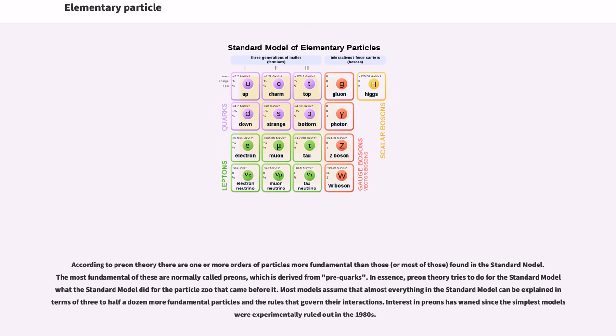According to preon theory there are one or more orders of particles more fundamental than those, or most of those, found in the standard model. The most fundamental of these are normally called preons, which is derived from pre-quarks. In essence, preon theory tries to do for the standard model what the standard model did for the particles that came before it. Most models assume that almost everything in the standard model can be explained in terms of three to half a dozen more fundamental particles and the rules that govern their interactions. Interest in preons has waned since the simplest models were experimentally ruled out in the 1980s.